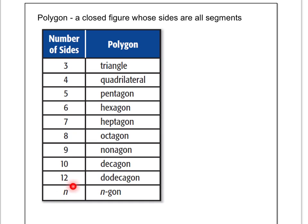You'll notice that once you get past 12, n just is really any number. So once you get past 12, if you have 13 for example, it's just called a 13-gon and you just put the number in front of G-O-N.